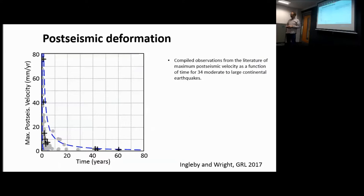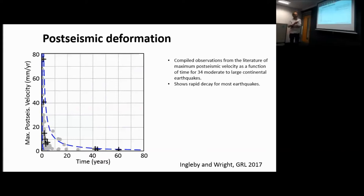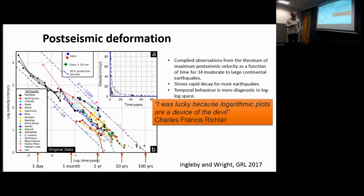This is work published this year in GRL by Tom Ingleby, a PhD student here at Leeds. For each earthquake, Tom looked at the maximum post-seismic velocity and tracked how it changed as a function of time. By the time he wrote this paper there were 34 moderate to large earthquakes with available data. On a linear plot you can see the velocities plotted as gray dots, decaying so that most post-seismic velocities have decayed by about 20 years for most earthquakes, though a little post-seismic motion persists quite late for some.